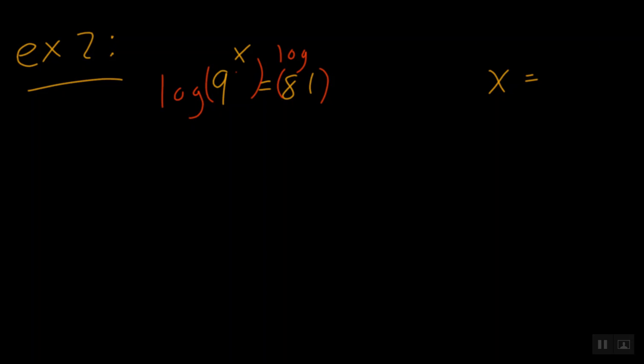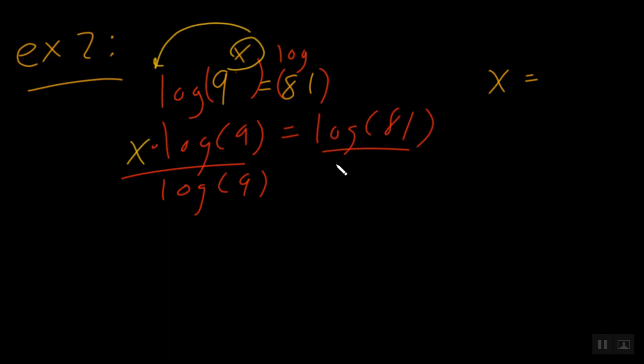And we'll say, this x gets to come down in front. And so we write x log of 9 is equal to the log of 81. And remember, when two things are side by side, they're being multiplied. So we have to divide both sides by the log of 9. That cancels. And now I have x is equal to...